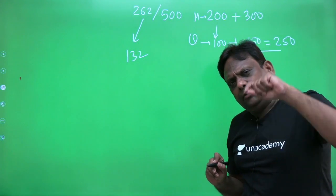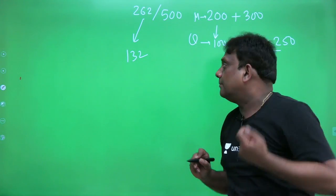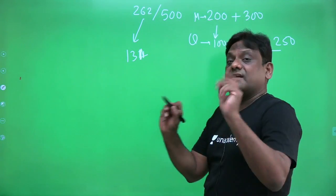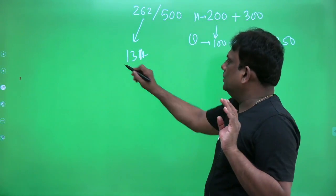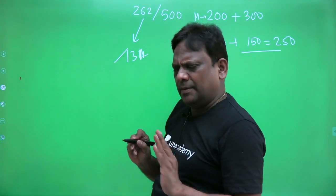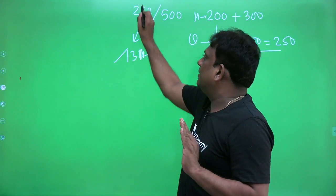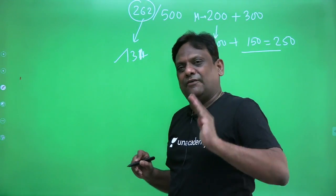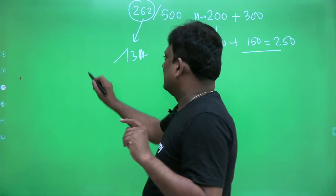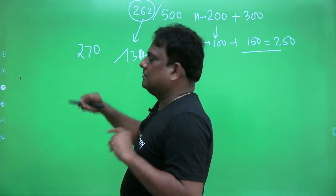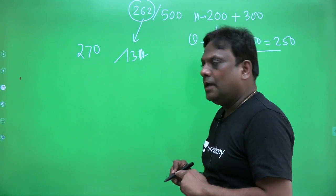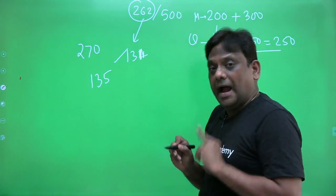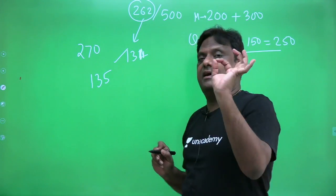We have actually non-technical portion for 200 marks and technical portion is for 300 marks. The number of questions are 100 for non-technical and 150 for technical. So overall, it is 250 total questions in preliminary. And if you see like this, each question is for two marks. So it means 132.